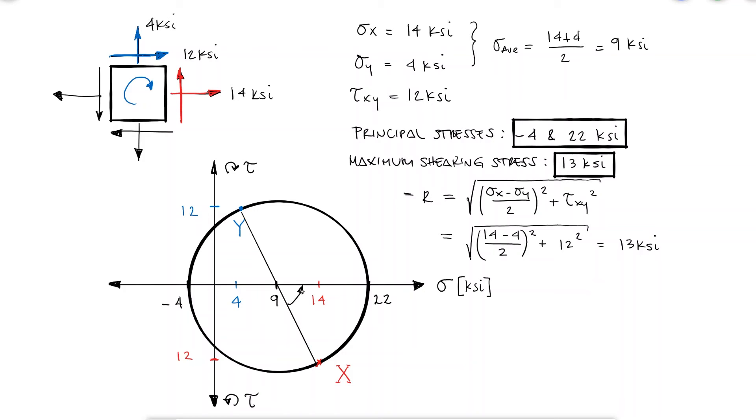For x to become our principal stress of 22 ksi, our stress state diagonal would have to rotate 67.4 degrees counterclockwise, which means that in the real world, our stress element needs to rotate 33.7 degrees counterclockwise for the new sigma x to be 22 ksi. The sigma y corresponding to that stress element would be minus 4, and of course the shearing stress would be 0.